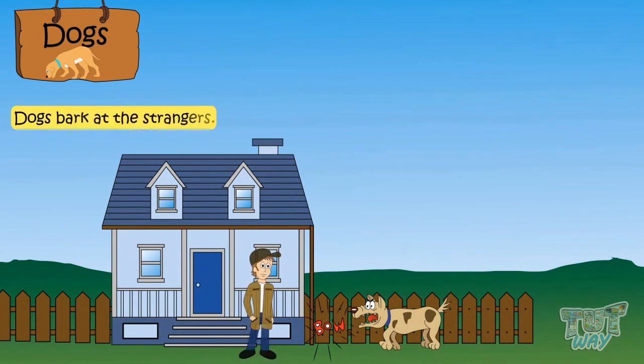Dogs bark at those who are strangers and this way make us alert if some stranger tries to enter our house.